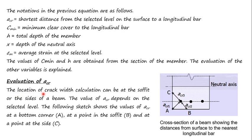For the evaluation of a_cr, the location of crack width calculation can be at the soffit or the sides of a beam. The value of a_cr depends on the selected level. Three values of a_cr can be identified: at bottom corner A (a_cr1), at a point in the soffit B (a_cr2), and at a point on the side C (a_cr3). The least of these three is taken as a_cr.